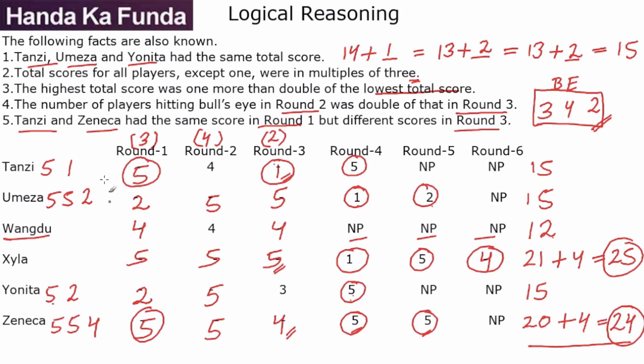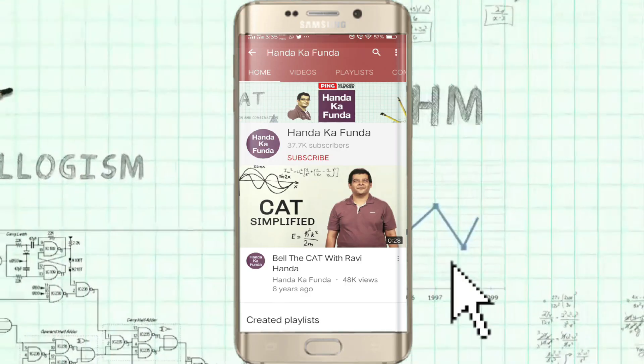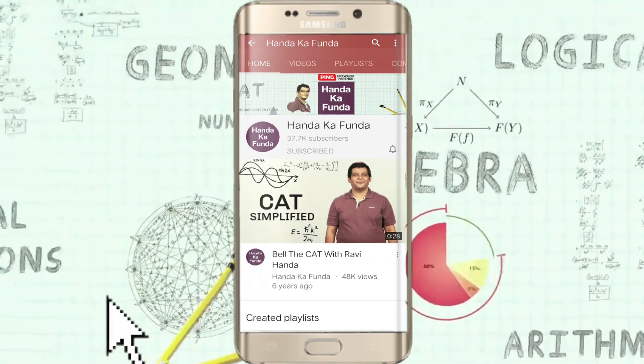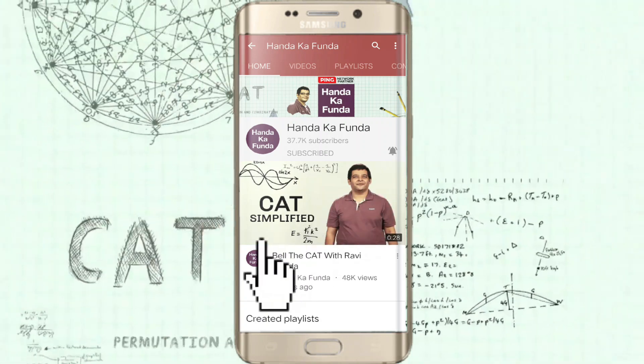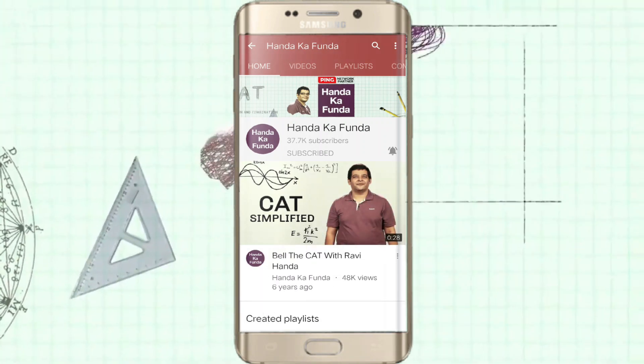So once you formed the table, then it became really, really simple. It took a little bit of time forming the table because of the conditions. But still, these kind of questions where you just need to fill the table with conditions are a little bit like Sudoku, and they should definitely be attempted in the exam. Thank you. Please remember to subscribe to our YouTube channel and press the bell icon to get notifications of future videos.